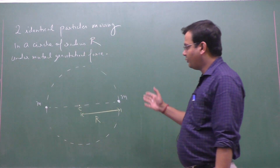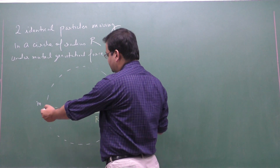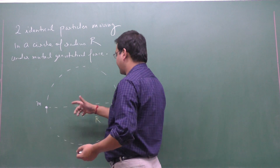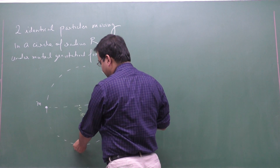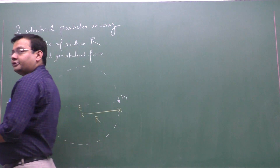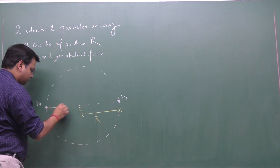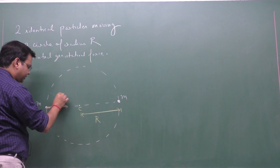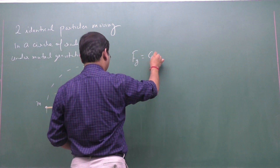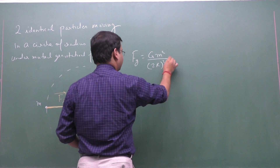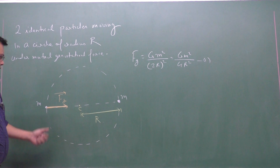When two identical particles are moving in a circle of radius R, at any instant they are located at the ends of the diameter. They interact through gravitational force on each other. The gravitational force on any one particle — say FG — has magnitude by Newton's law of gravitation: G·m²/(2R)² = G·m²/4R².